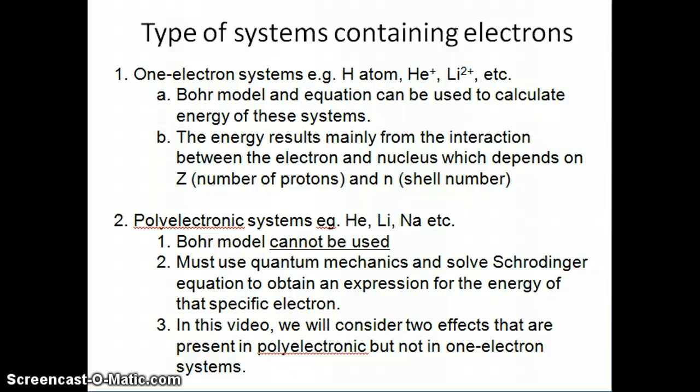We can differentiate between atoms and ions two different ways. Basically, we can say that there are systems, ions or atoms, that contain only one electron - so we can call these one-electron systems. And these are things like hydrogen atom, it only has one electron. The helium plus ion only has one electron. The lithium two plus ion also only has one electron. So anything where you have only one electron, you are able to use the Bohr model and the Bohr equation for energy to calculate the energy of the electrons in these systems. And we're going to review this in the next slide, but you can look back at the discussion about the Bohr model and the equations used to calculate the energy.